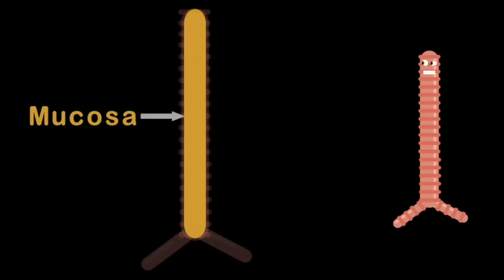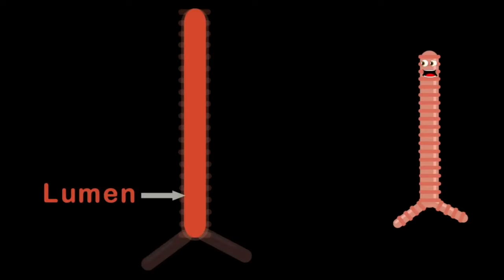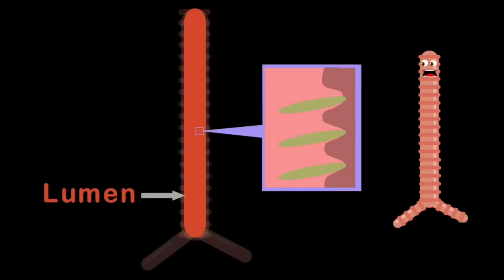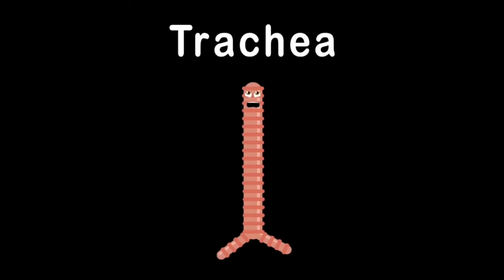Inside the trachea is lined with a smooth tissue called the mucosa — this fact is very true. Then the lumen is next — it's the hollow channel airway lined with hair-like projections called cilia that sway. These cilia trap the particles we discussed. The lumen walls create mucus through cells and ducts. I am your trachea, I'm about four to five inches long, an important part of you, so you'll learn in this song.